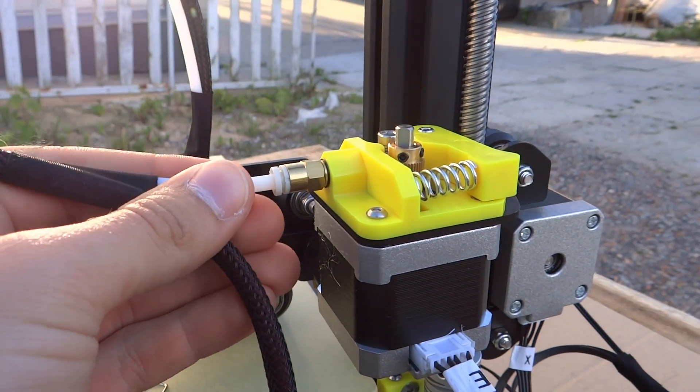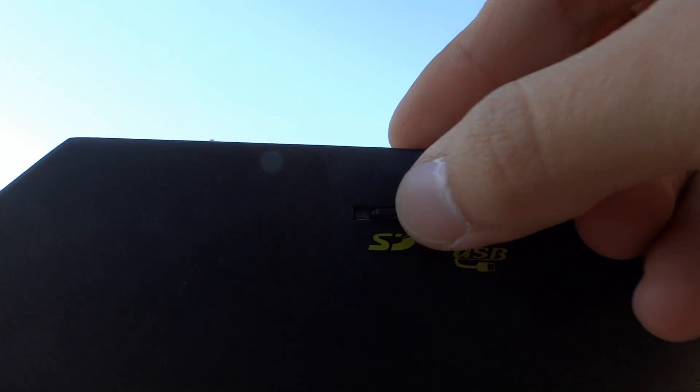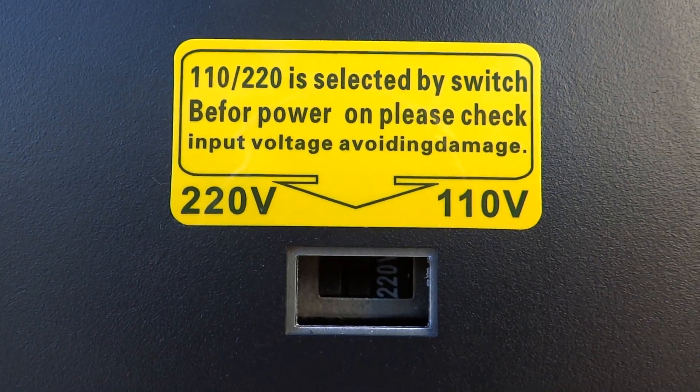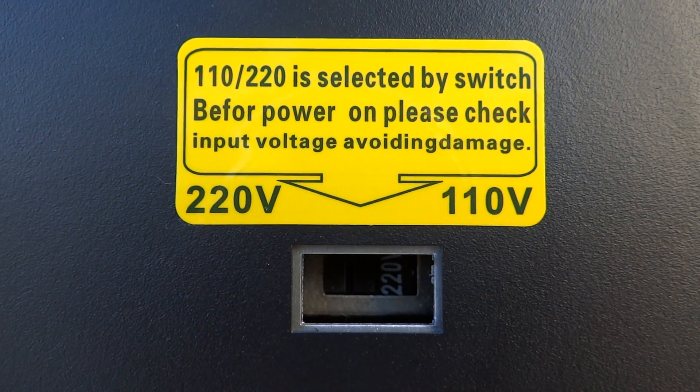We can connect filament guide, that's this plastic tube, to extruder. Plug an SD card to slot in the control box. Make sure that the switch on the bottom is in good position for voltage in your country. That's very important.